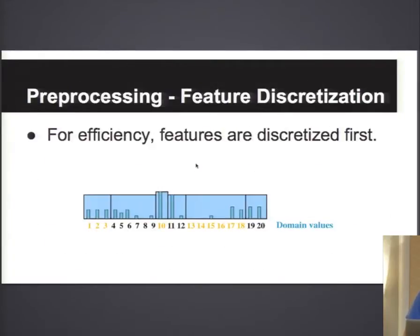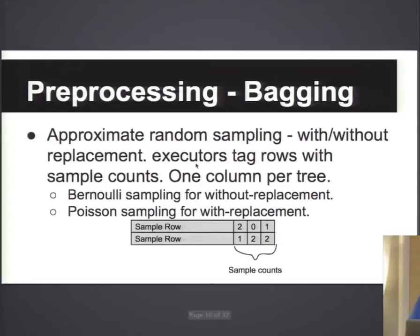Before you train a decision tree or random forest, typically what you do first is discretize the features if they are numeric. The reason you do this is because it makes it easier to compute statistics at different bins, and then later on when you're trying to split a tree node, you basically split on bin boundaries.